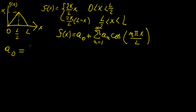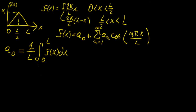Now we find our two Fourier coefficients. First, a₀ is defined as 1/L times the integral from 0 to L of f(x) dx — it's just the average value. We're taking the area underneath the function within the interval and dividing by the size of the interval.